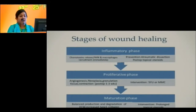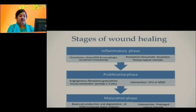During the proliferative phase, we can intervene with subconjunctival 5-fluorouracil or mitomycin C. The last is the maturation phase, in which there is balanced production and degradation of extracellular matrix and increased deposition of type 1 collagen, which has more tensile strength than type 3 collagen. This phase can be intervened with either prolonged topical steroids or may require surgical intervention.